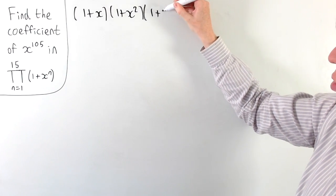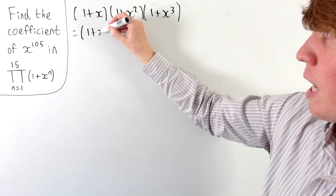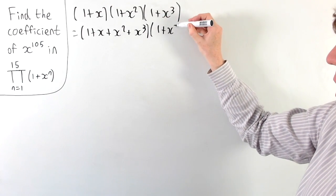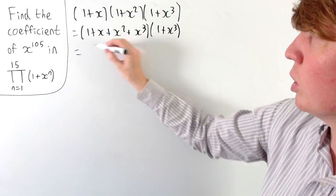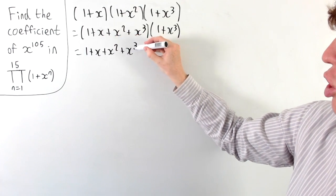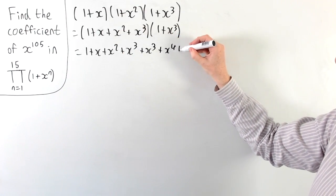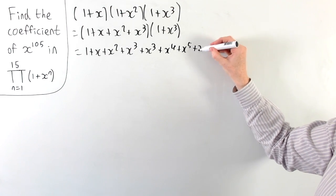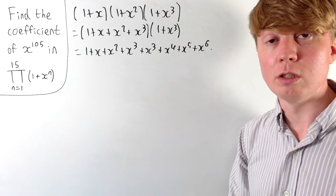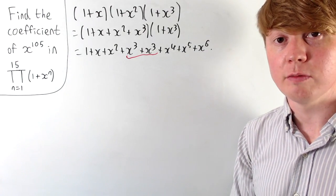If we take the first three terms and expand out the first pair of brackets, we get 1 plus x plus x squared plus x cubed. Then multiplying this out by 1 plus x cubed: when we multiply by the 1, we just get a copy of everything we already had, plus x cubed. Then when we multiply everything by x cubed, we get another x cubed, plus x to the 4, plus x to the 5, and finally plus x to the power of 6. The coefficients of all the powers of x are 1, with the exception of x cubed which has a coefficient of 2.